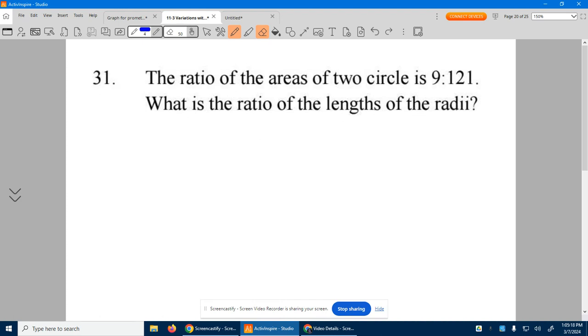31. The ratio of the areas of two circles is 9 to 121. What is the ratio of the lengths of the radii?